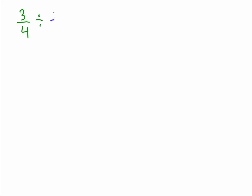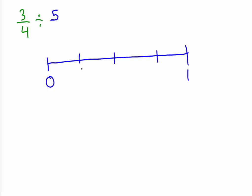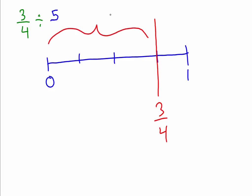Let's divide three-fourths by five. If it's not three-fourths, just make whatever fraction it says. Put a zero and a one, make fourths — boom, boom, boom — and locate three-fourths right here. We have to take all of this space and chop it into five pieces.